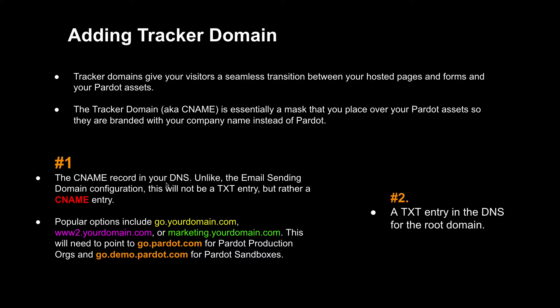You might be wondering how to decide the Tracker Domain name. Popular options include go.yourdomain.com, www.yourdomain.com, or marketing.yourdomain.com — it can be anything you append to your root domain. This CNAME entry at your DNS will need to point to go.pardot.com for a production setup, or go.demo.pardot.com if you're setting up the Tracker Domain for your Pardot sandbox.